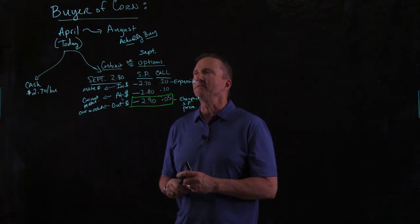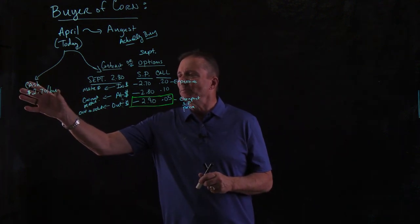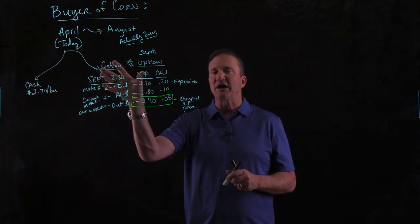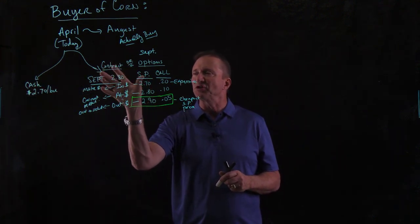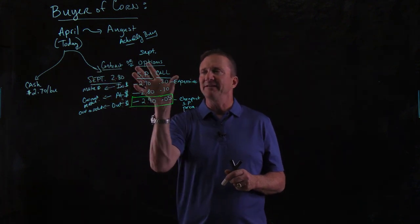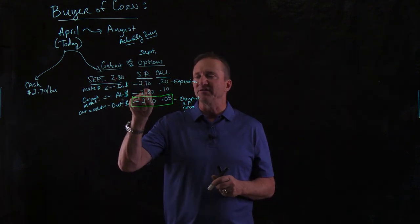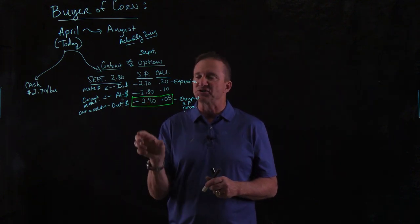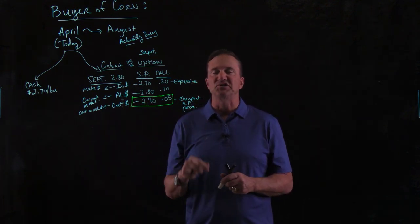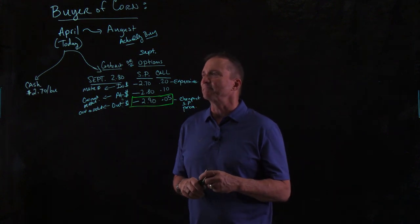So this is the information that you need to always be given: the cash price, the futures contract that you're looking at and what it's worth, and then you need to have the options. You'll have different strike prices, and you're looking for the one that's out of the money — the cheapest premium. That's the one you're probably going to be using.